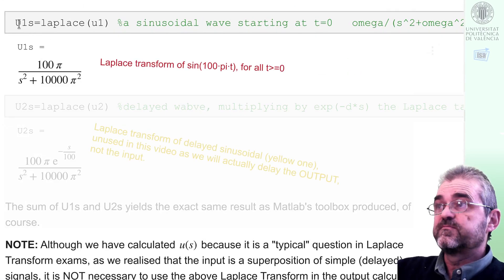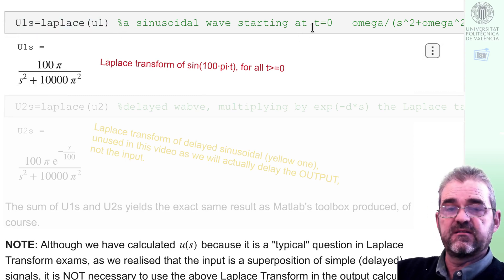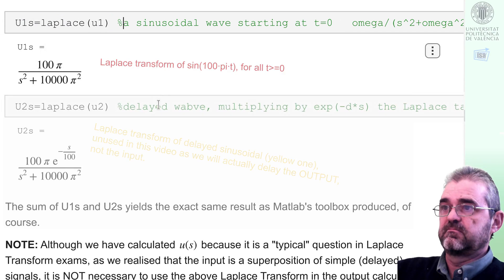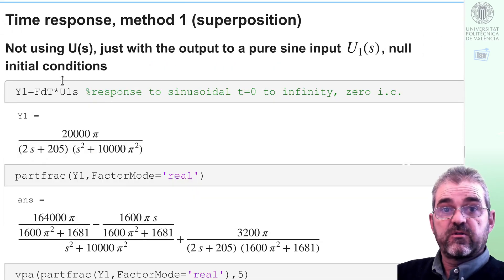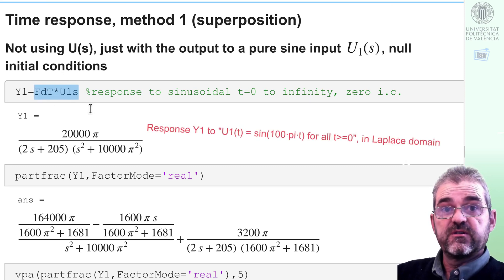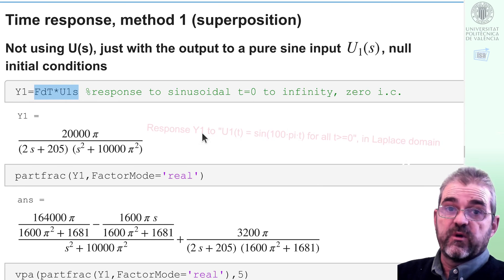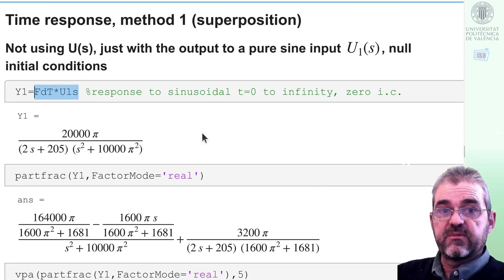The Laplace transform of the red sinusoidal will be U1S, sinusoidal starting at t equals 0. Let us now compute the time response to 0 initial conditions by first computing the time response to the red sinusoid starting at t equals 0 to infinity. I get this y1.